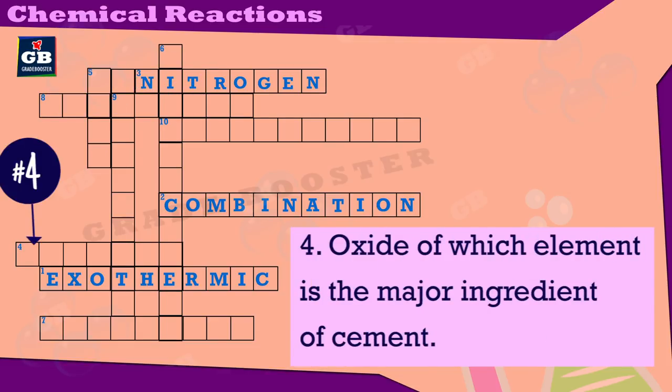Oxide of which element is the major ingredient of cement? Kaunsi element ki oxide cement ki ek important ingredient hai? Answer: calcium.